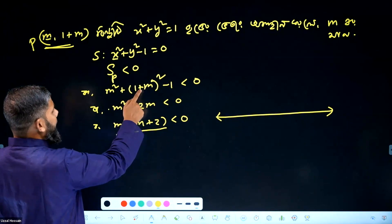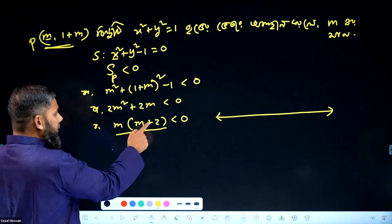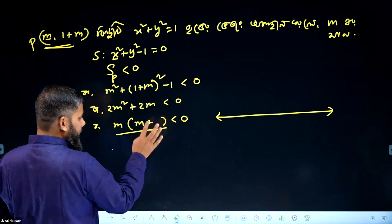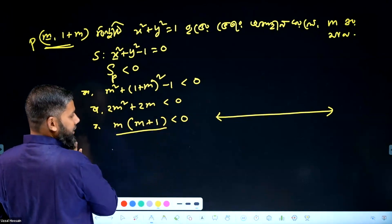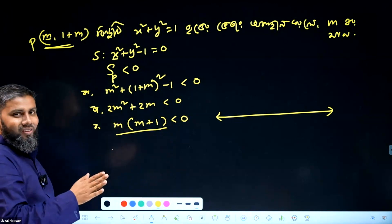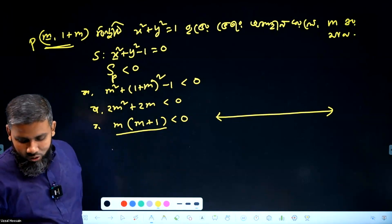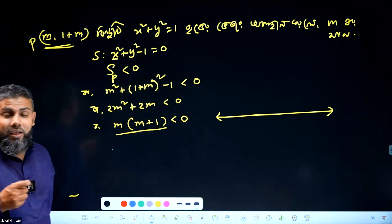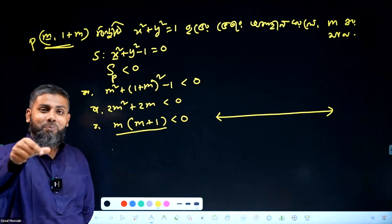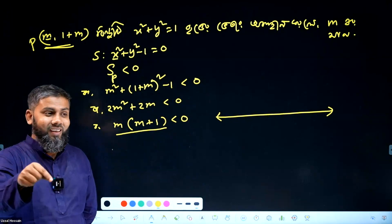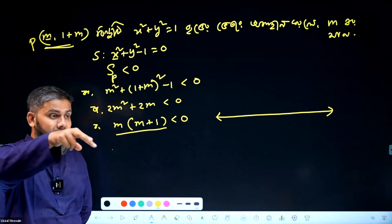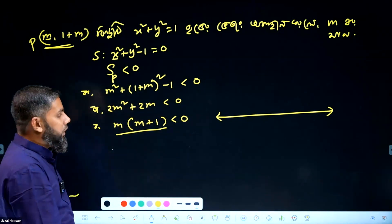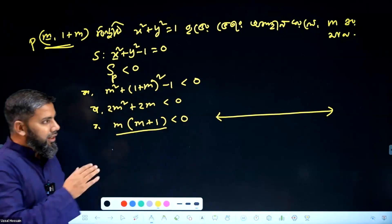m square plus m square — that is 2m square. So if we take M common, it becomes M into M plus 1. Very good, very good. Okay. Now, SP less than 0 means P-bindu is inside the circle — value obtained by substituting P into the circle equation is less than zero.